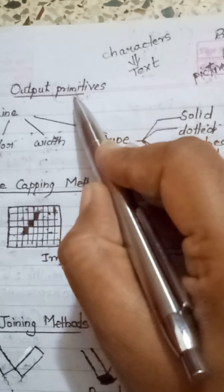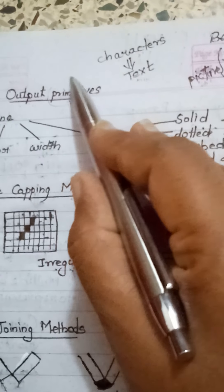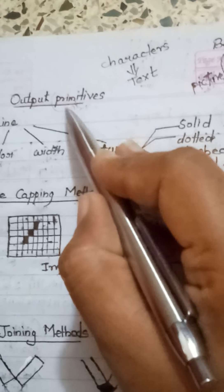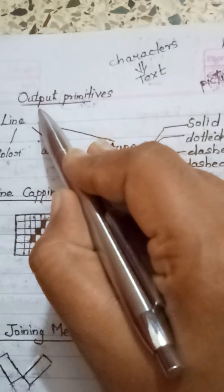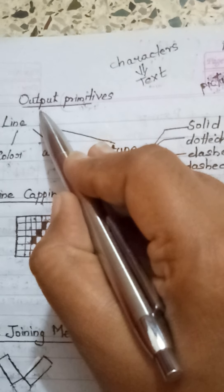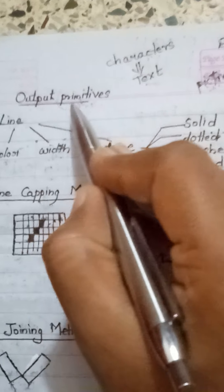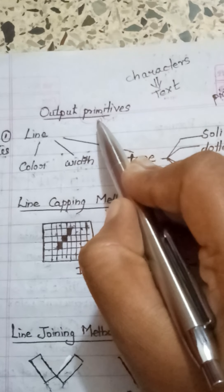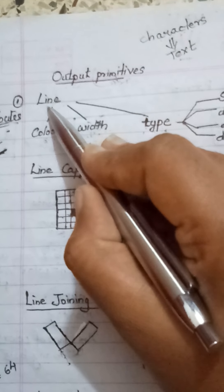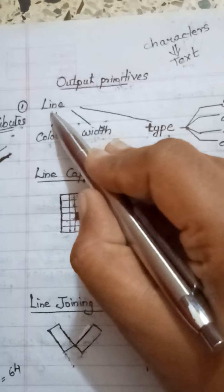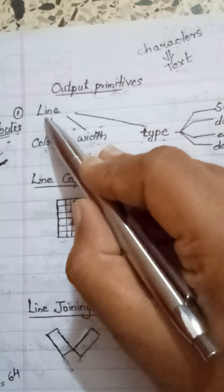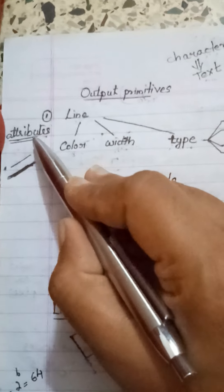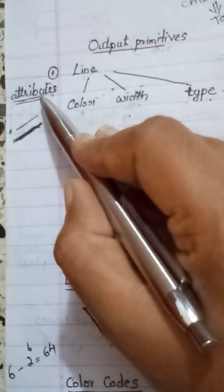Output primitives are the many basic elements that can be used to produce an output. In the first section of output primitives, we will be learning about a line. Line is a primitive that can be used to draw pictures. In this, we will be learning various attributes of line.